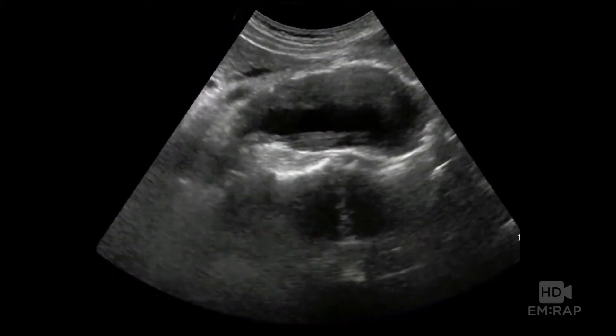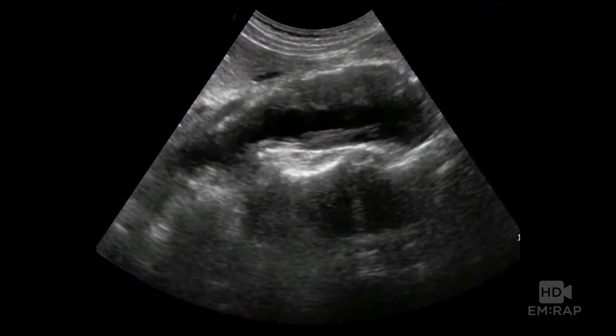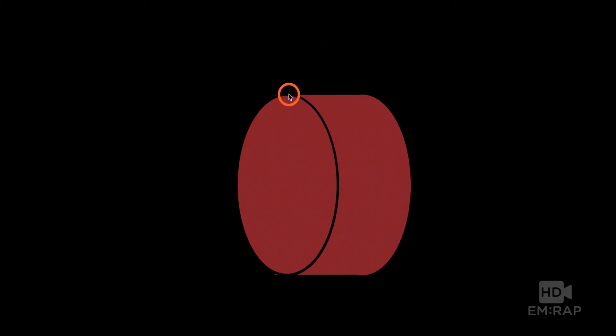You can get a longitudinal view, but it's much less useful and you risk underestimating size. If you get a perfect center slice, you'll get a good measurement — but if you're oblique, you'll underestimate the size. Most diseased aortas are not in a perfectly straight line, so it's difficult to know if you're perfectly centered. For that reason, we measure the diameter of the aorta in cross-section, not longitudinal.